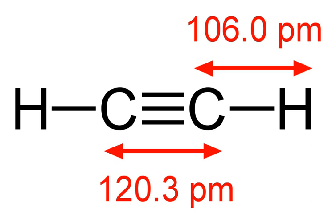It is unstable in its pure form and thus is usually handled as a solution. Pure acetylene is odorless, but commercial grades usually have a marked odor due to impurities. As an alkyne, acetylene is unsaturated because its two carbon atoms are bonded together in a triple bond. The carbon-carbon triple bond places all four atoms in the same straight line, with CCH bond angles of 180 degrees.